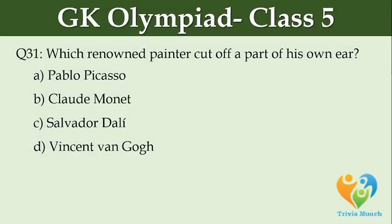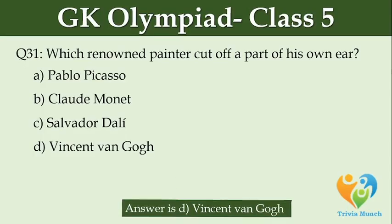Which renowned painter cut off a part of his own ear? Option A: Pablo Picasso. Option B: Claude Monet. Option C: Salvador Dali. Option D: Vincent Van Gogh.